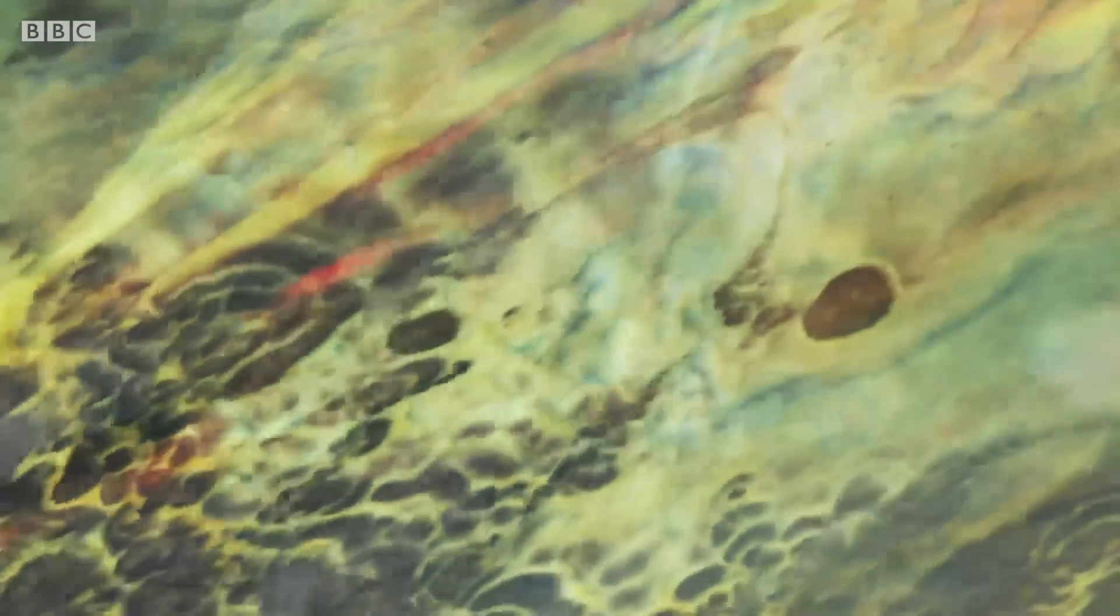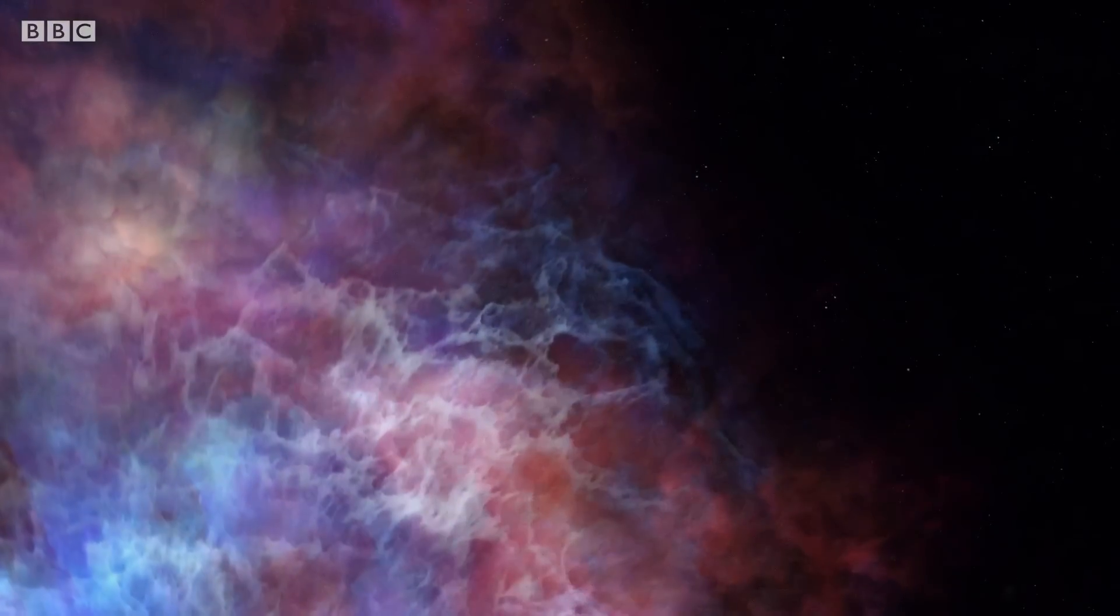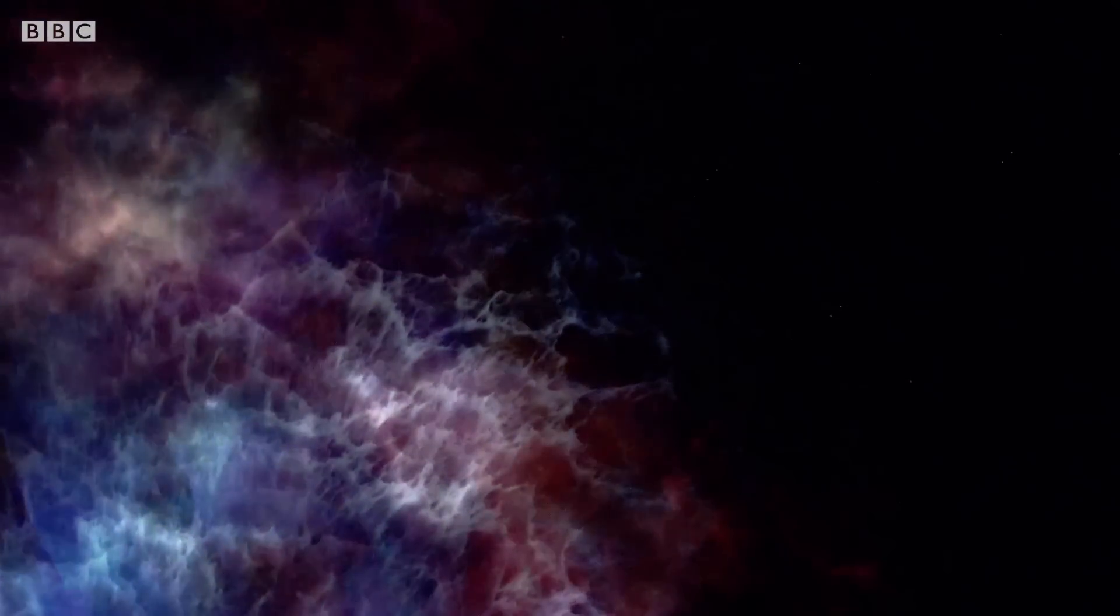In this single instant, Betelgeuse will release more energy than our sun will produce in its entire lifetime. As the star is torn apart, it will fire out into space all the elements that it has created in its life and death. Those elements will spread out to become a nebula, a rich chemical cloud drifting through space.